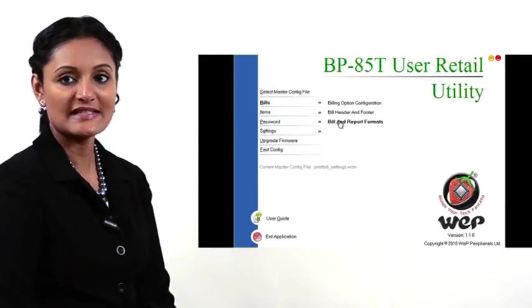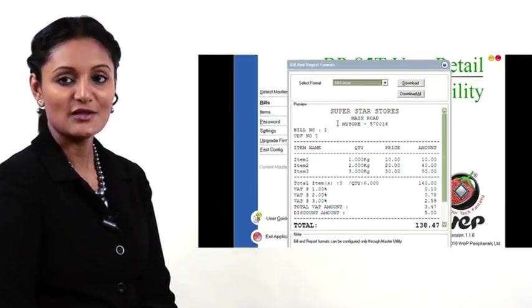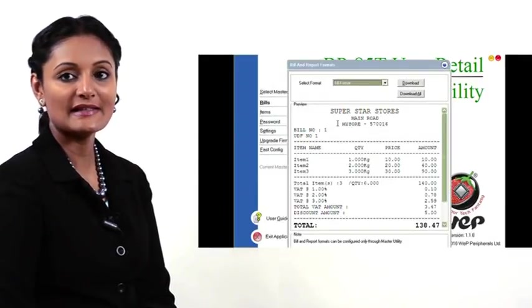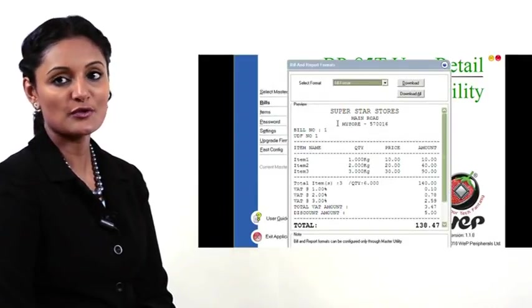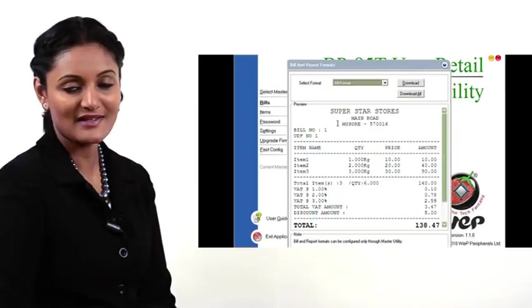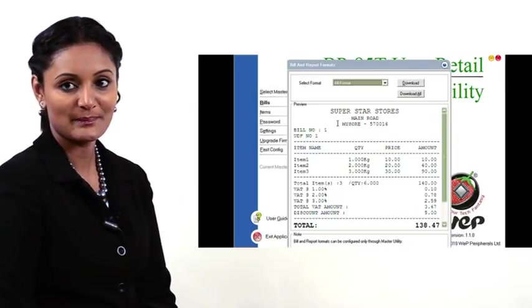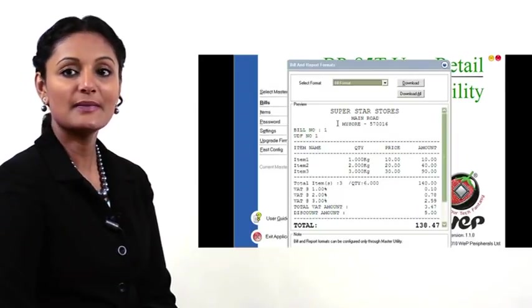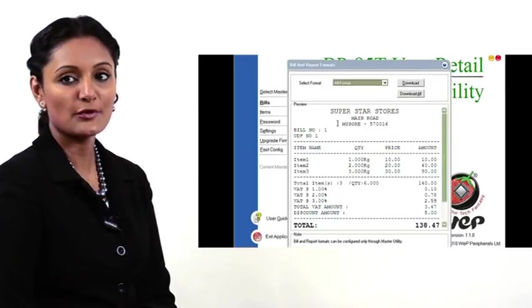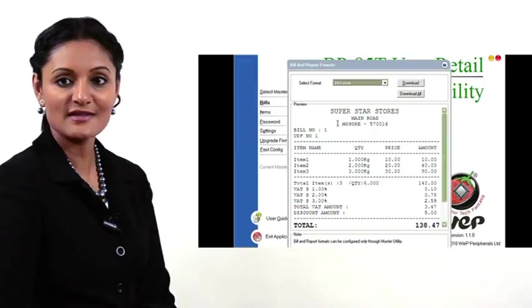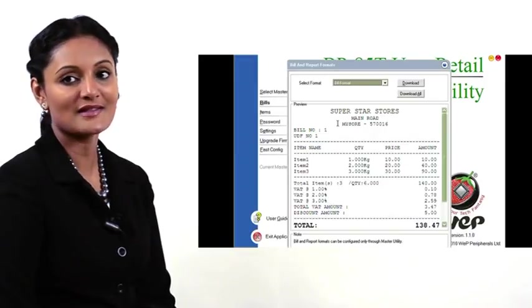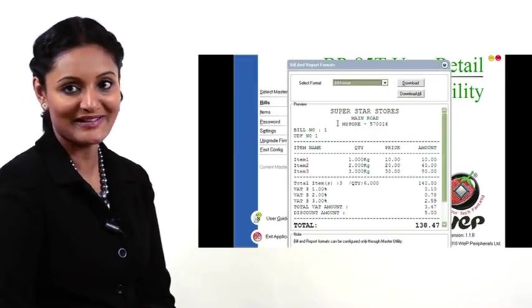Use the user retail utility to download bill and report printing formats to the printer. The bill and report formats are stored in the master config file.